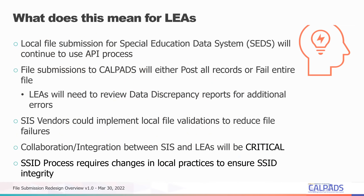What does this mean for LEAs? Special education files will continue to come through the system via the API, but all files will have the same rule: if all records pass, they post; if one record generates an error, the whole file is rejected. That applies to the SPED and SSRV files too. Even though they come through the API, the file submission view will tell you whether the file passed or failed.